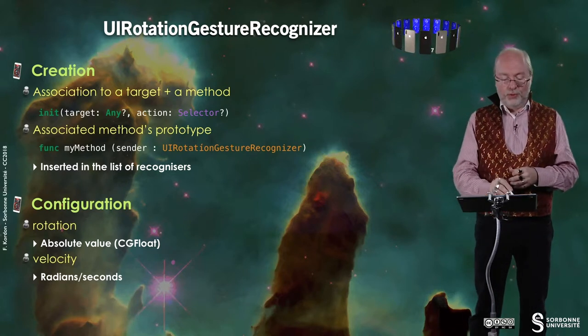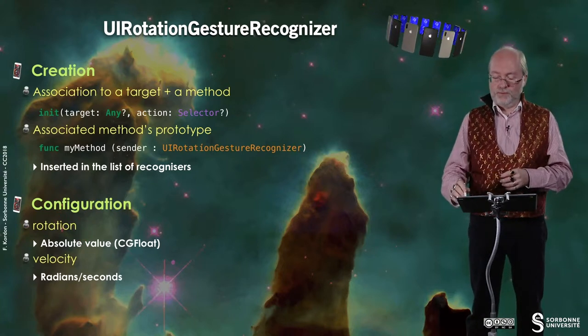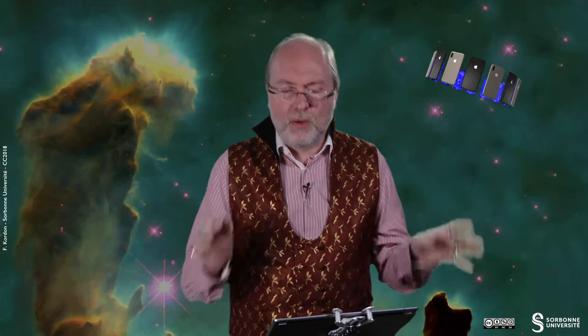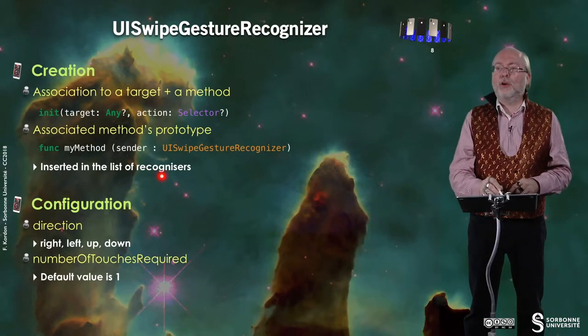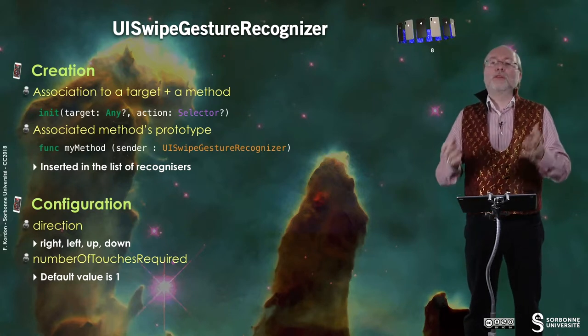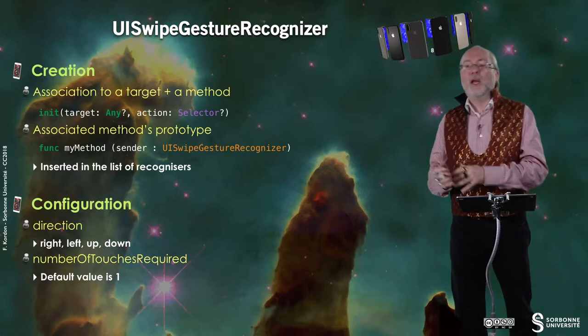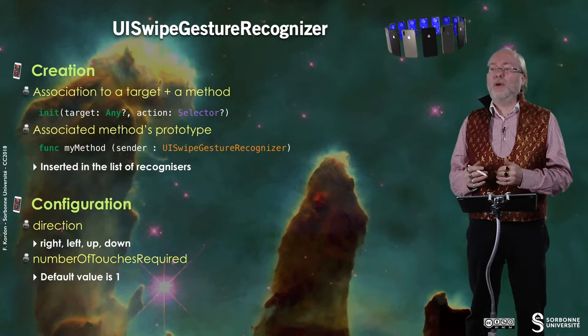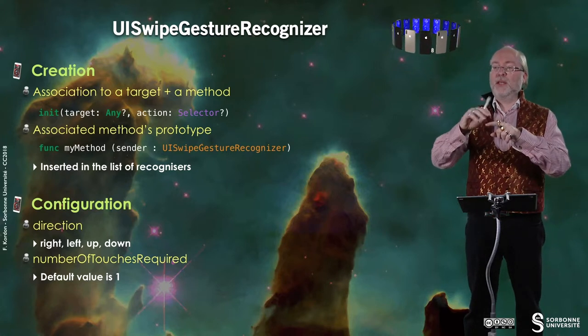UISwipeGestureRecognizer follows the same approach. You create it, associate the handler, and add it to the list of recognizers. You can then specify the direction — left, right, up, or down — and the number of touches required. This allows you to distinguish between different swipe interactions.